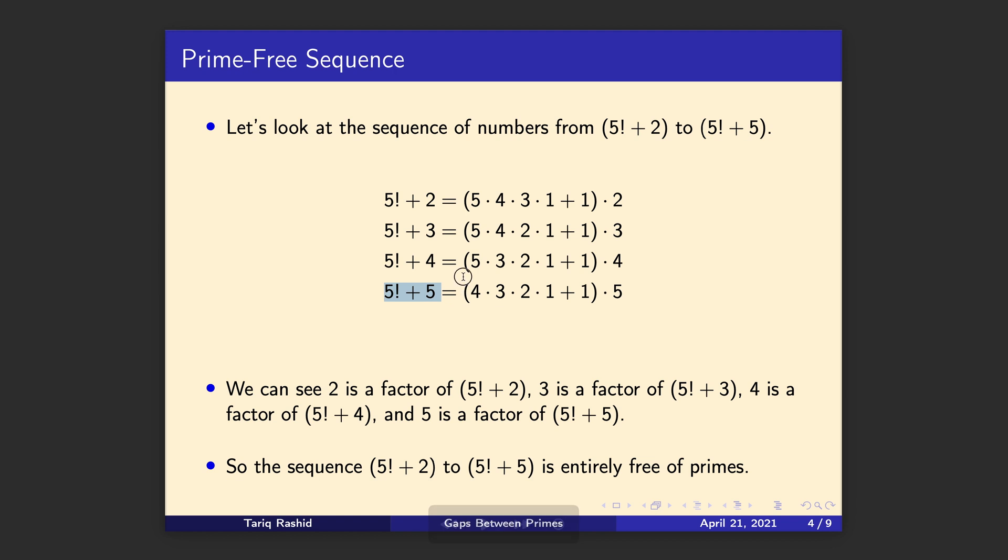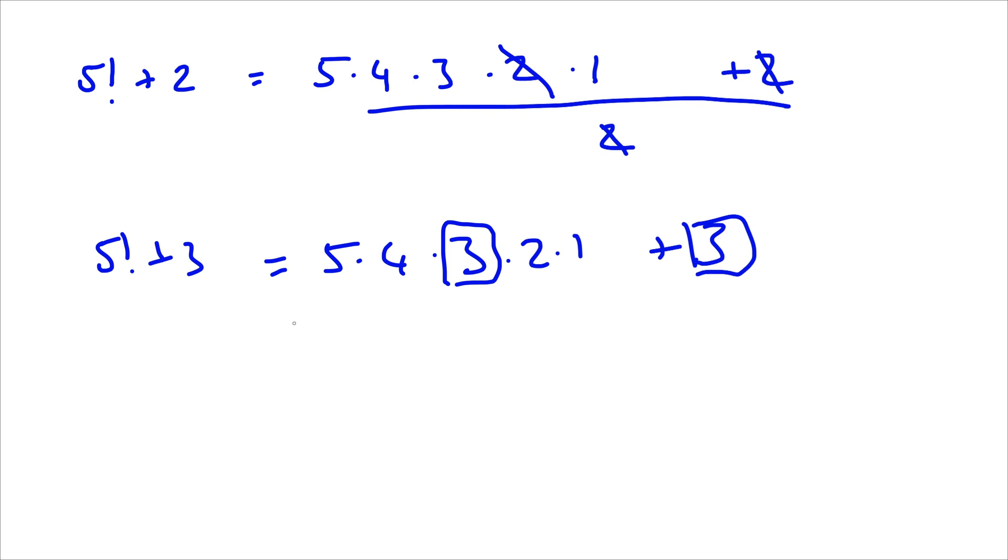Let's just do that by hand in case it wasn't clear. So we've written 5 factorial plus 2 equals 5 times 4 times 3 times 2 times 1 plus 2. Is that divisible by 2? Well, we can because that divides by 2 easily and this divides by 2. And we can do the same again. 5 factorial plus 3 equals 5 times 4 times 3 times 2 times 1 plus 3. We can see straight away that there's a 3 in there and a 3 in there. So when we divide by 3, it cancels neatly without a remainder. We can do that for 2, 3, 4, 5. So that's the pattern to spot.